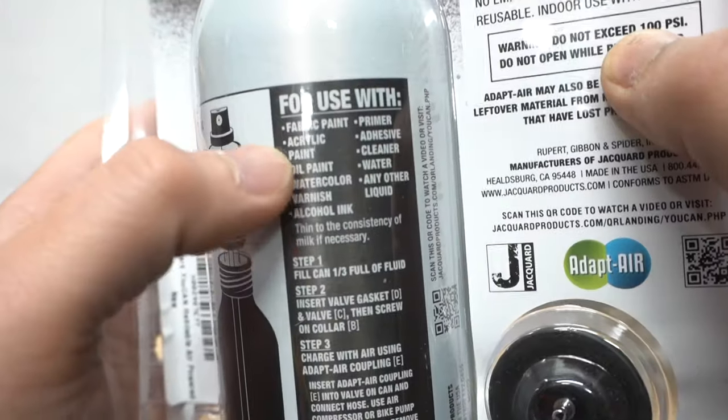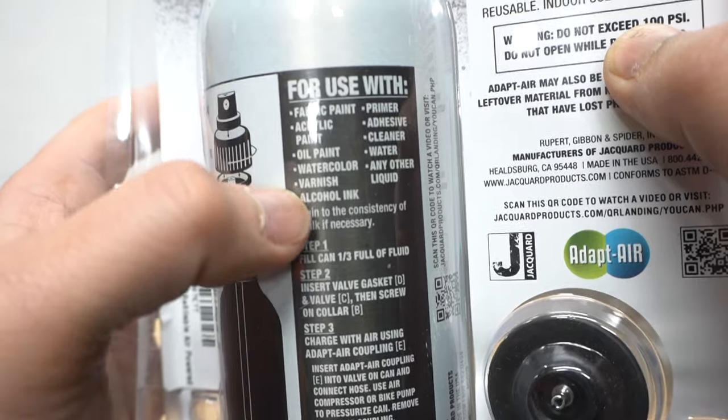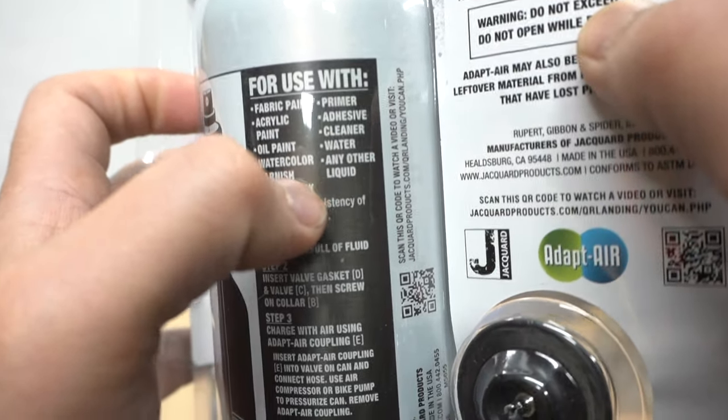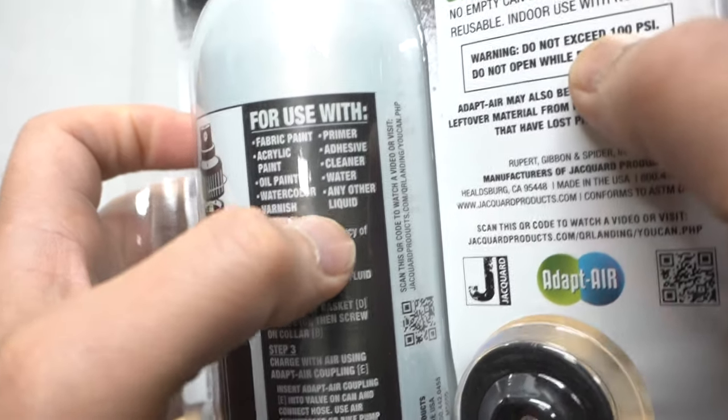It comes with the stem where you recharge it, but this only comes as a spray version top nozzle. Now it says on the back that you can use it with fabric paint, acrylic paint, oil paint, watercolor, varnish, alcohol ink, primer, adhesive, cleaner, water and any other liquids.